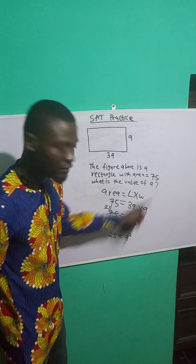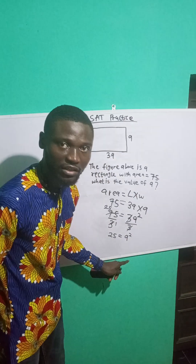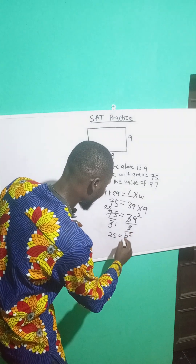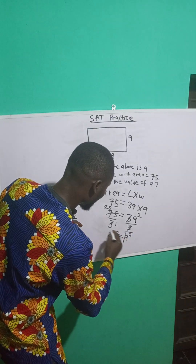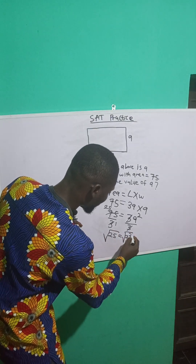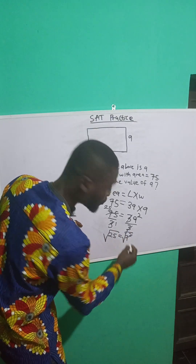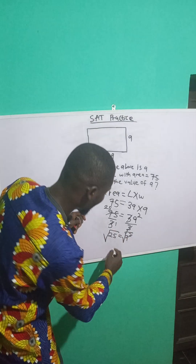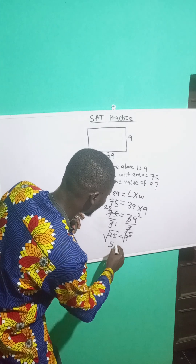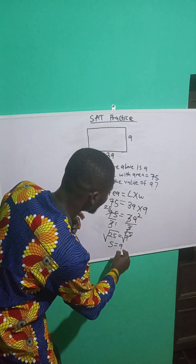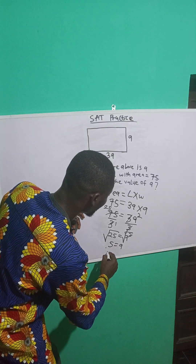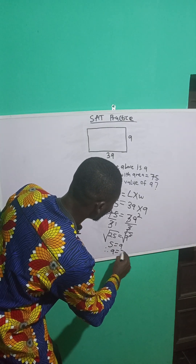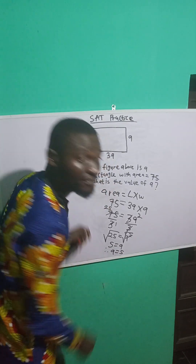But I'm looking for the value of A and not A squared, so I'll take the square root of both sides. The square root cancels the square. The square root of 25 is 5, so 5 is equal to A. Therefore, the value of A is 5.